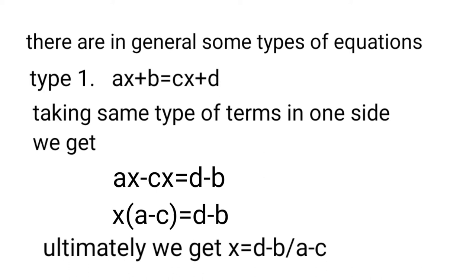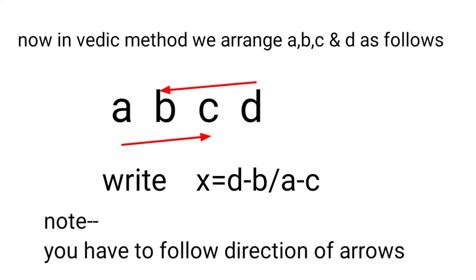Now this can be used as a formula to work out solutions. In the Vedic method, we arrange a, b, c, and d as follows. Note: you have to follow the direction of arrows. With a, b, c, d arranged accordingly, x equals (d - b) upon (a - c).